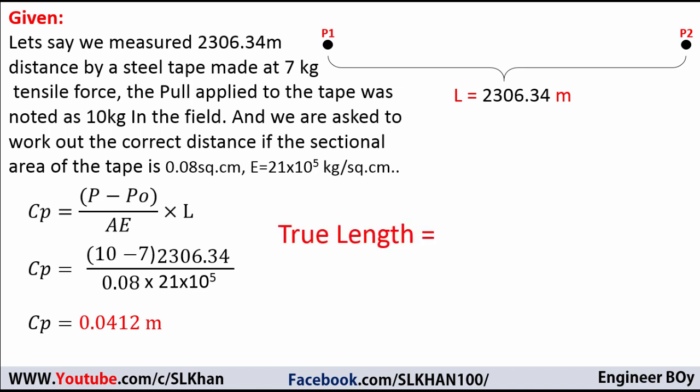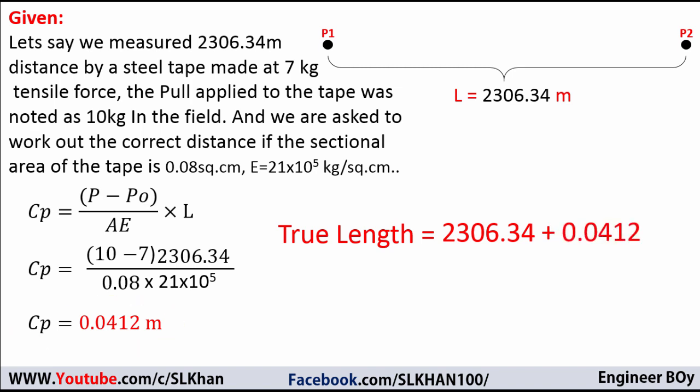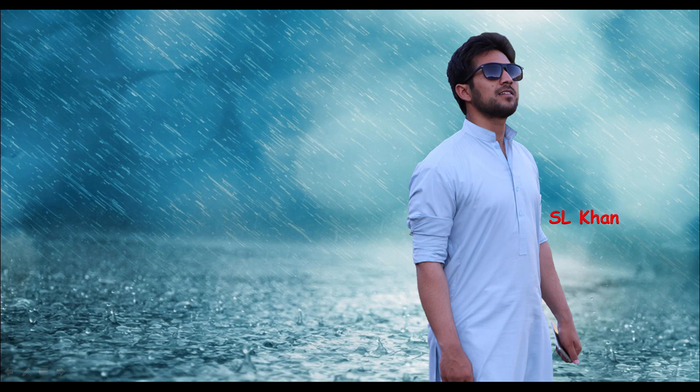Now the correct distance is the measured length, 2306.34, plus the pull correction, which is 0.0412, so the correct distance is 2306.3812 meters. That's it — this is how we calculate the pull or tension correction. If you like these types of videos, please hit the subscribe button, press the bell icon, and never miss an update from Engineer Boy. Thank you for watching, see you next time.